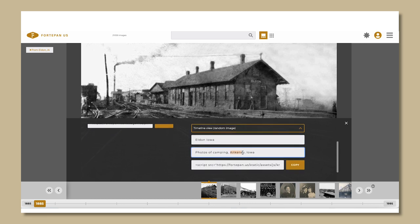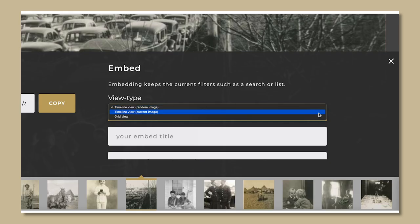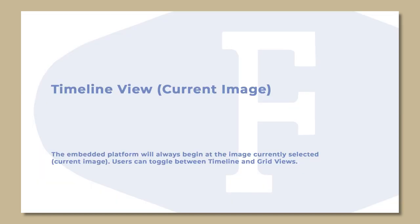First, go through the process of grabbing the code from the front end of the interface. You have three choices. Timeline view, current image: the embedded platform will always begin at the image currently selected. Users can toggle between timeline and grid views.